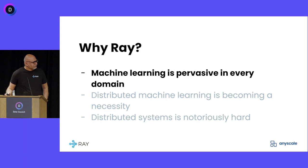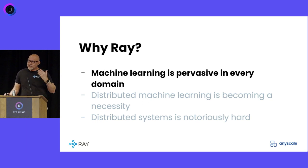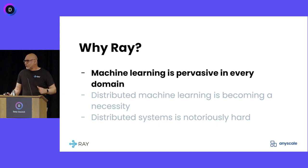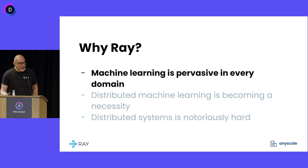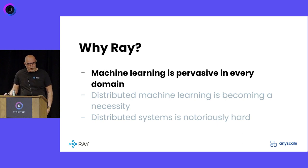So why Ray? The original creators of Ray were PhD students guided by Ion Stoica at RISELab. Those of you who have heard of RISELab — it was the successor to AMPLab, where Spark, Mesos, and Kafka were born. RISELab was the ten years after that, this new emergence of distributed computing. The creators were looking at industry trends — what was actually happening, what's the next big thing?